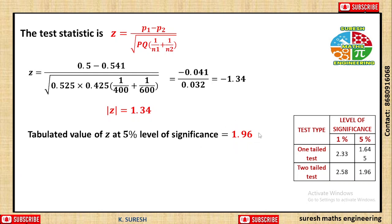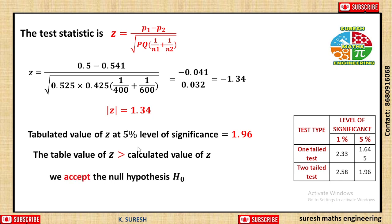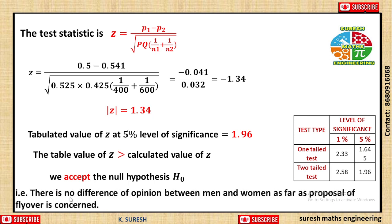The table value is 1.96 and calculated value is 1.34. The table value of z is greater than the calculated value of z. Since this condition is satisfied, we accept the null hypothesis H0. This means there is no difference of opinion between men and women as far as the proposal of flyover is concerned.